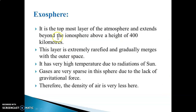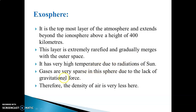Exosphere — it is the topmost layer of the atmosphere, extending beyond the ionosphere above a height of 400 km. This layer is extremely rarefied and gradually merges with outer space. It has very high temperature due to solar radiation. Gases are very sparse in this sphere due to the lack of gravitational force, and therefore the density of air is very less here.